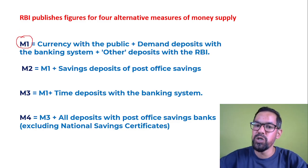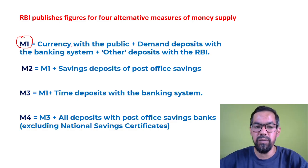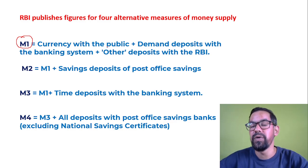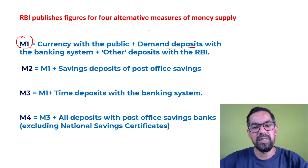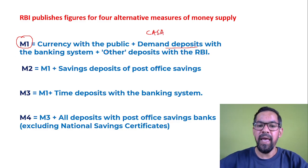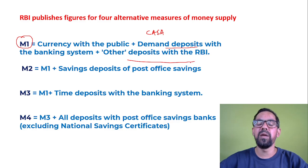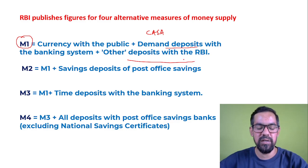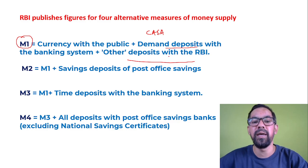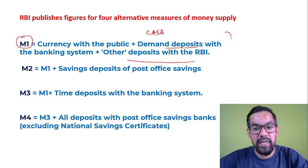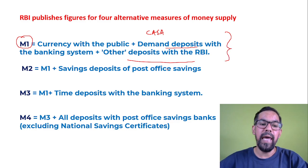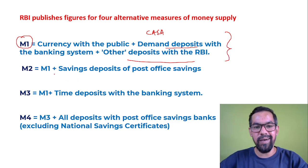M1 generally includes currency with the public, demand deposits with the banking system — which are CASA deposits: current account and savings account deposits with banks — and other deposits with RBI, such as SLR, CRR, or other deposits made by banks or financial institutions with RBI.